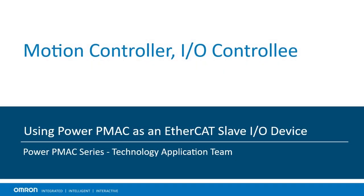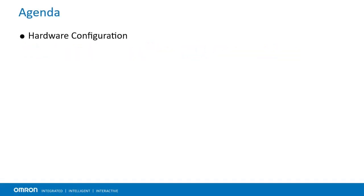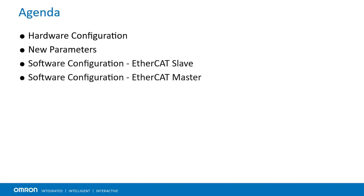In this video, we will discuss how to use PowerPMAC as an EtherCAT Slave I/O device. First, we will discuss how to configure the hardware. Then, we will discuss the new parameters that can be used on the EtherCAT Slave device. Finally, we will discuss the software configuration, both on the EtherCAT Slave device and also on the EtherCAT Master.